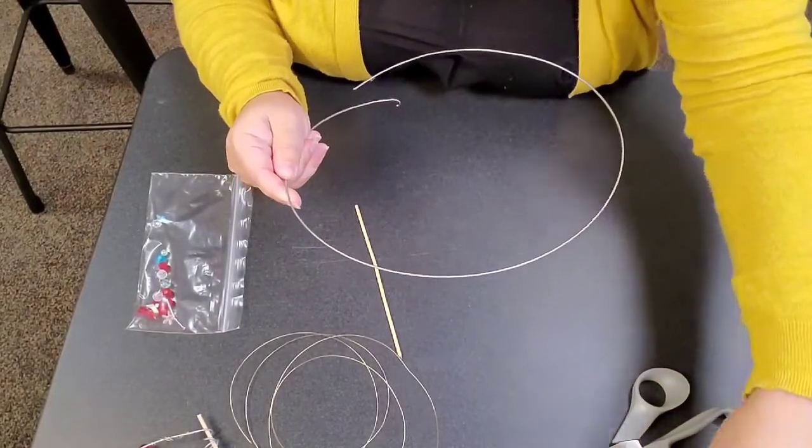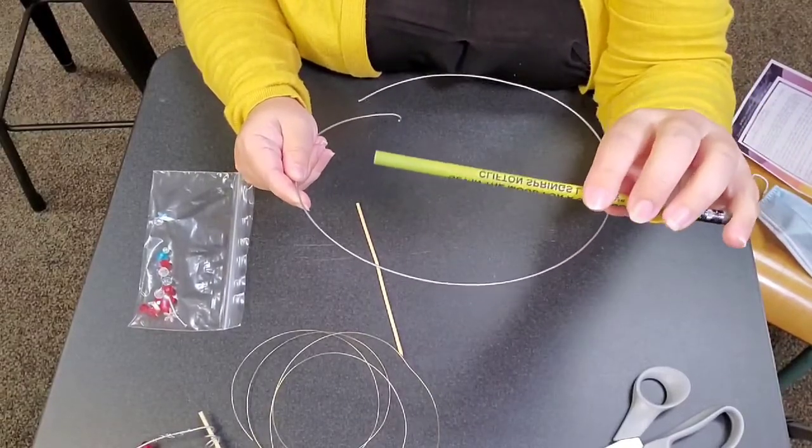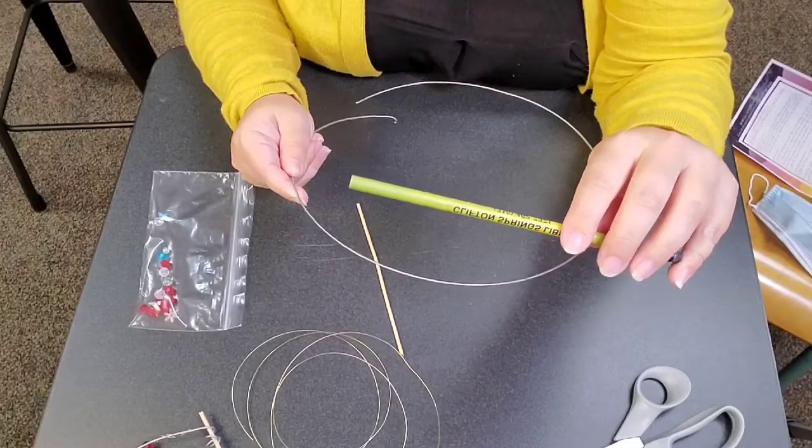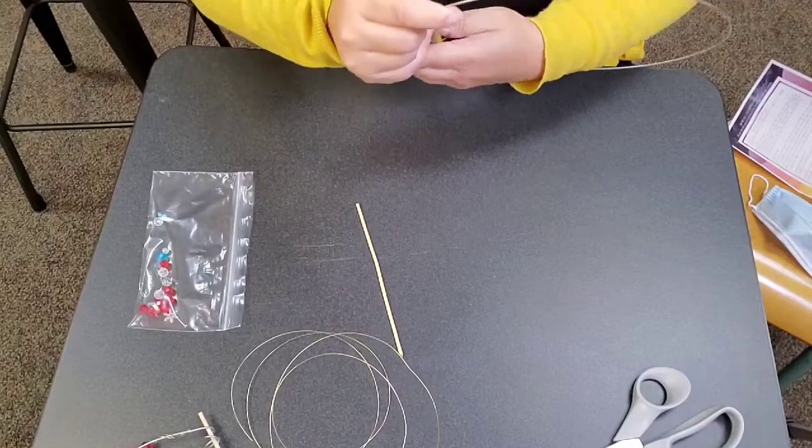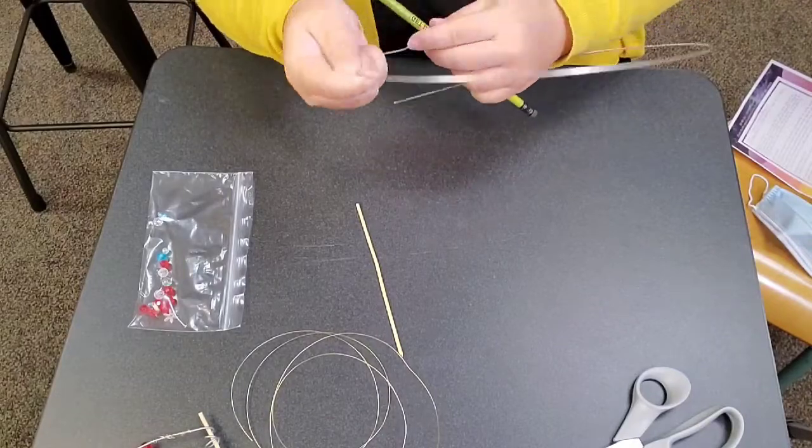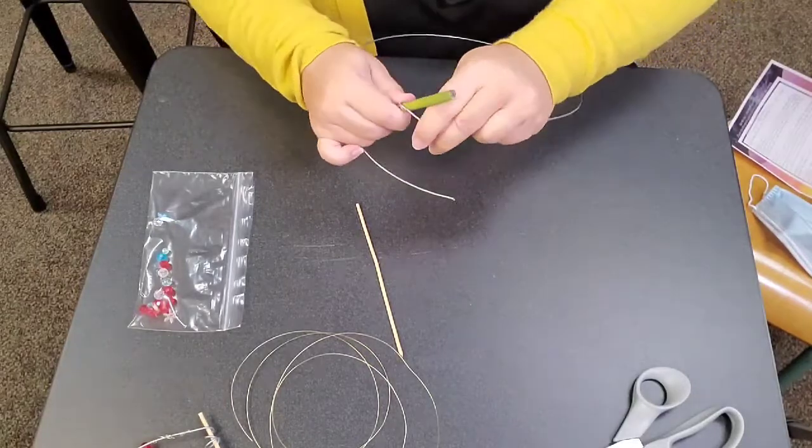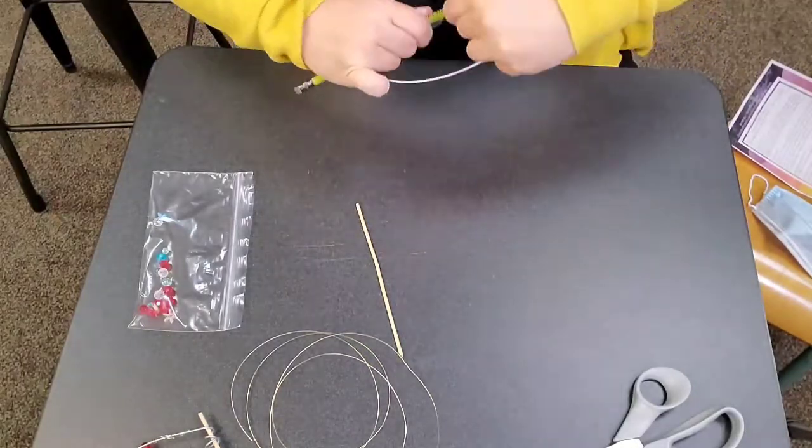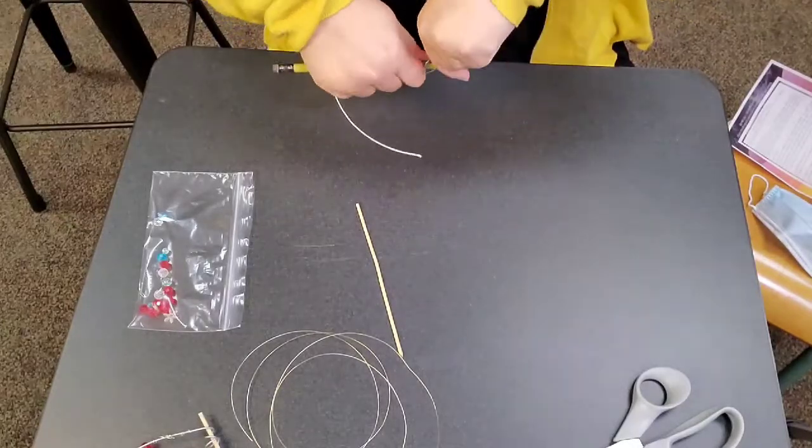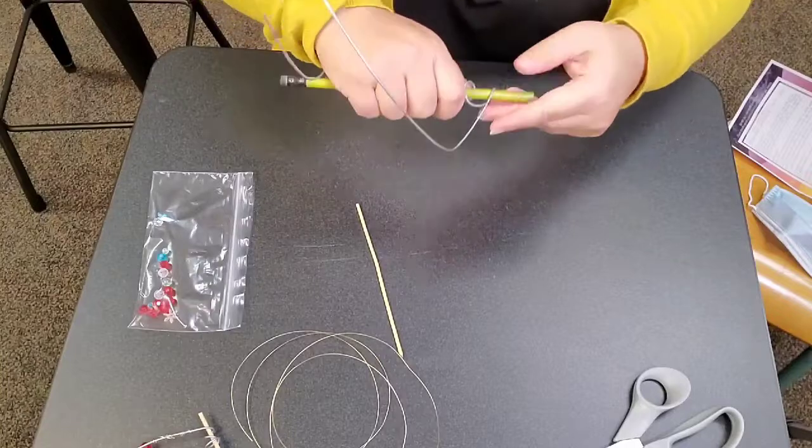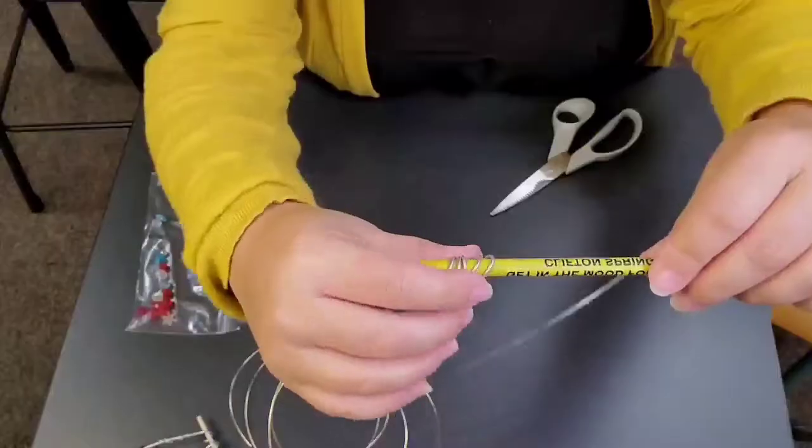So I'm going to grab a pencil. Go ahead and just grab any pencil you have, a pen, a chopstick, anything that will help you make some nice little curlicue spirals. And you are going to use your pencil or whatever you choose to begin to spiral the bottom of the perch.